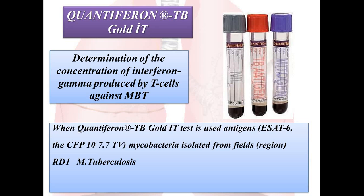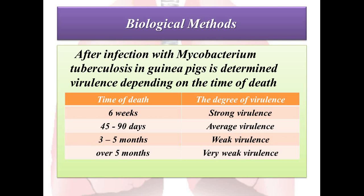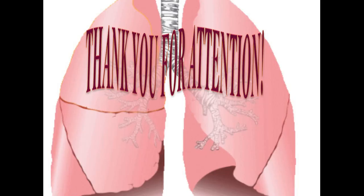Unlike the TB skin test, QuantiFERON-TB Gold Plus is not affected by prior BCG vaccination. After infection with Mycobacterium tuberculosis, the virulence is determined depending on the time since infection: six weeks is strong virulence, three months is average virulence, three to five months is weak virulence, and over five months is very weak virulence. Thank you for your attention.